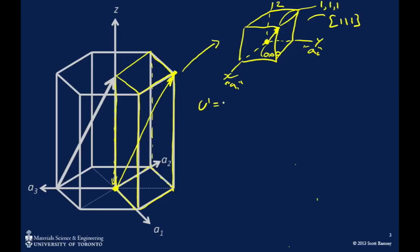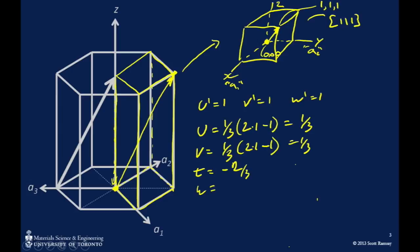So if u prime equals 1, v prime equals 1, and w prime equals 1, we can easily convert to u, v, t, and w. So u is just going to be 1 third times 2 times 1 minus 1, which is just equal to 1 third. V equals 1 third times 2 times 1 minus 1, which is 1 third. Now, remember, t is u plus v, all made negative, so it's actually negative 2 thirds, and w is just w prime, which is just 1.